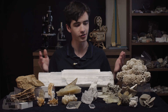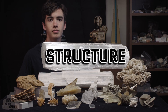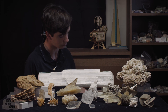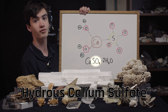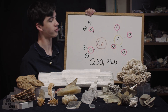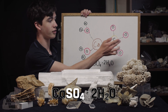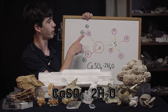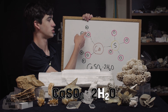To find out what causes selenite to form in so many shapes, we need to look at the individual units that make up every selenite crystal — and that is a hydrous calcium sulfate. That's really just a calcium atom bonded to a sulfate molecule, which is one sulfur surrounded by four oxygens, as well as two water molecules, H2O.